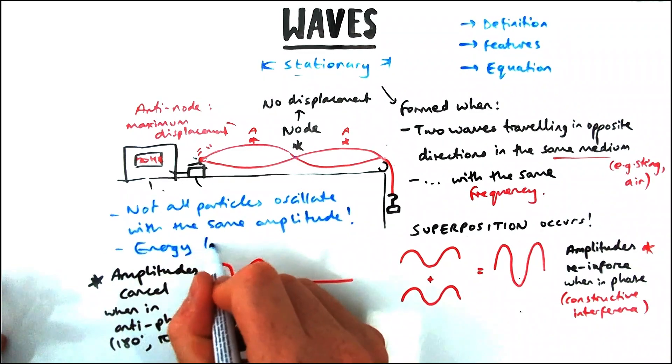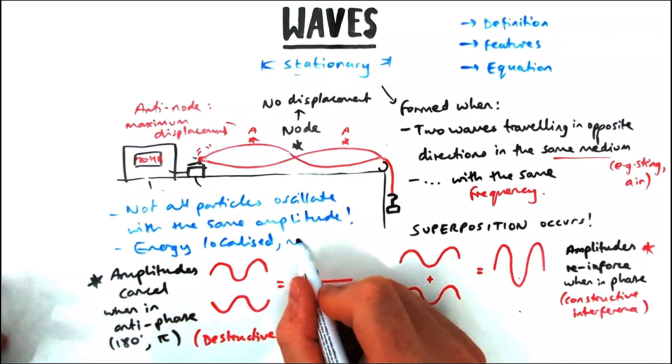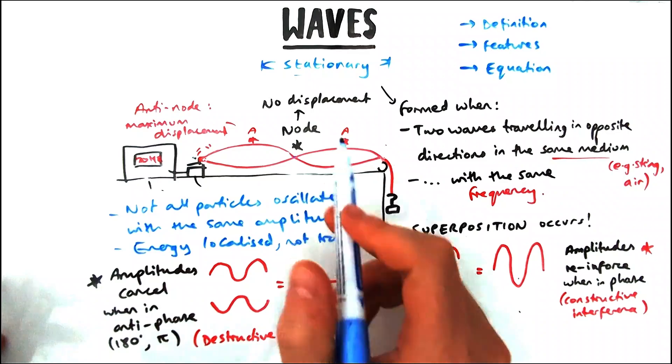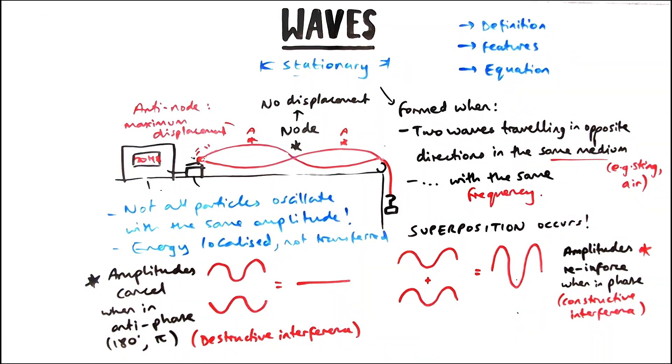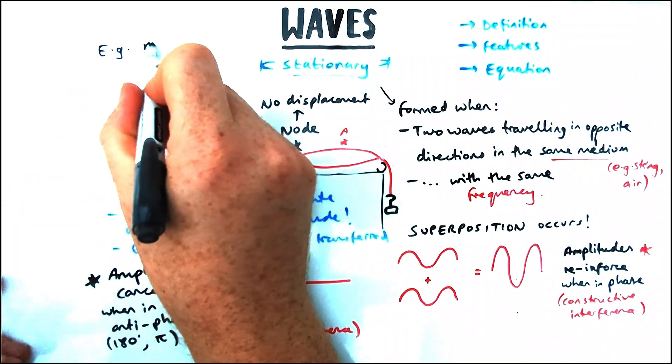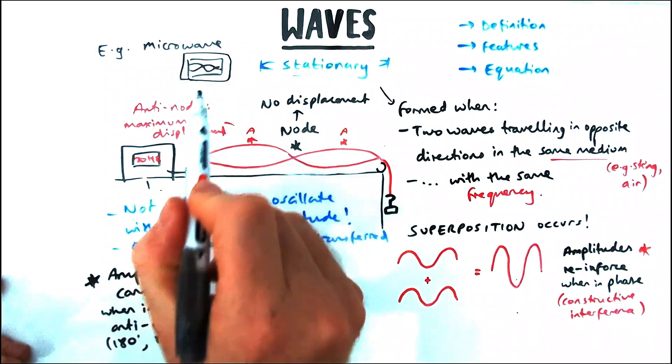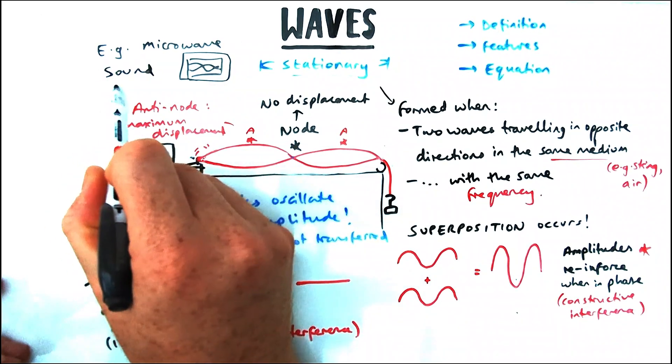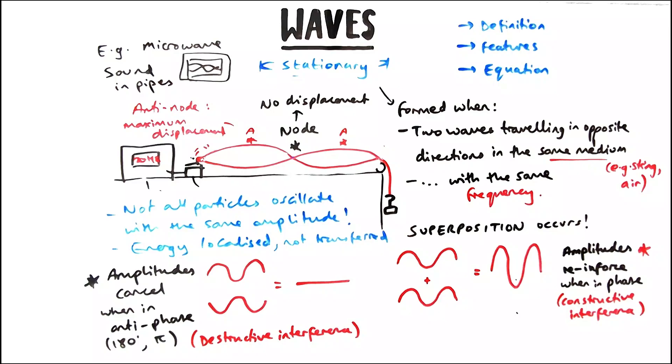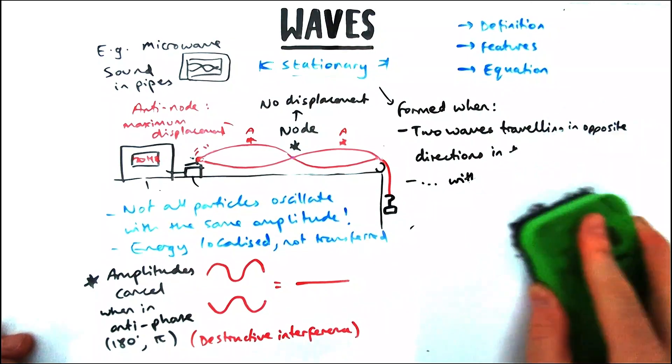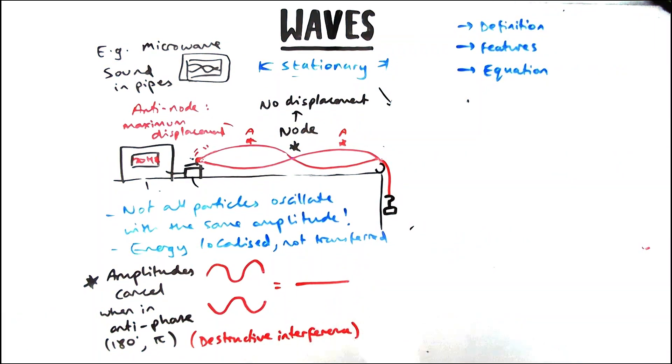Stationary waves in general are very different to regular progressive waves in that not all particles oscillate with the same amplitude. If you're in the ocean and a progressive wave comes past, you go up, you go down. These particles are not like that. The energy is localized and the particles either oscillate with zero amplitude or maximum amplitude or somewhere in the middle, but it doesn't change. Other examples of these you might find: microwave ovens have stationary waves in them, also musical instruments using sound, and things like that.